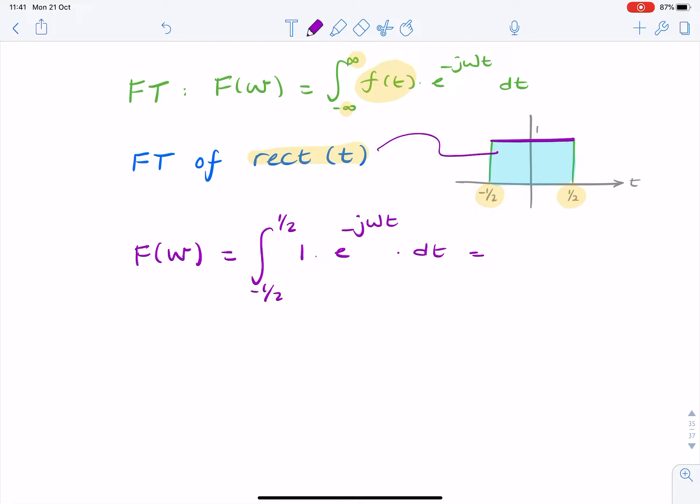That simplifies to minus one over j omega, times e to the minus j omega t, and the limits minus half to half.